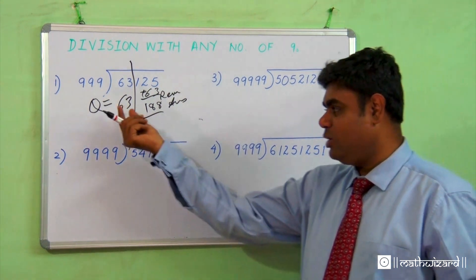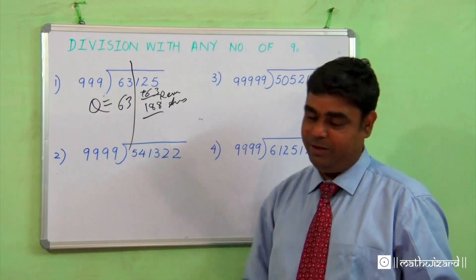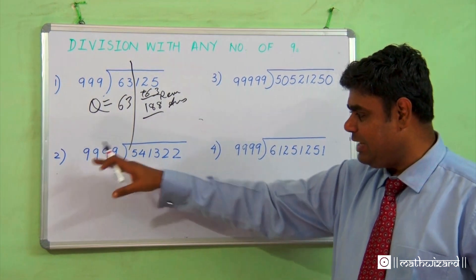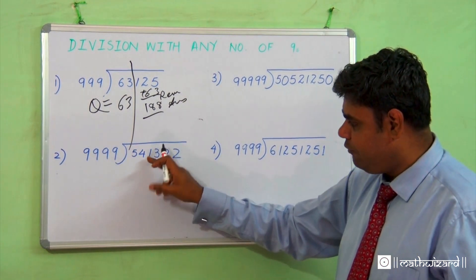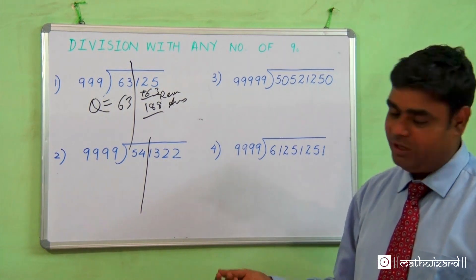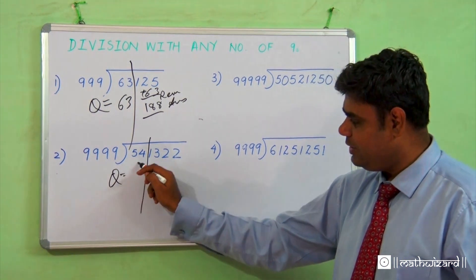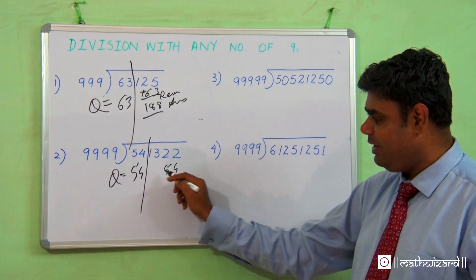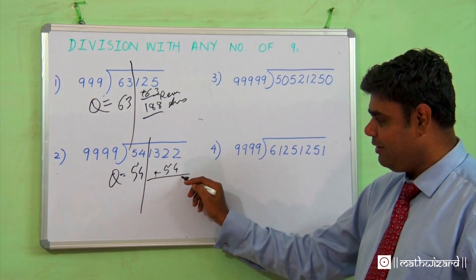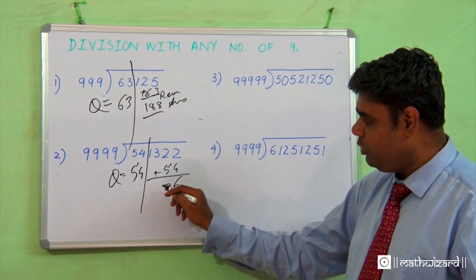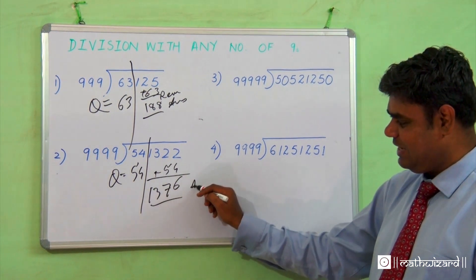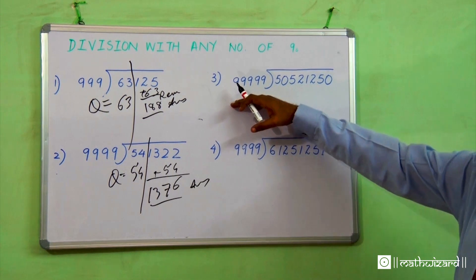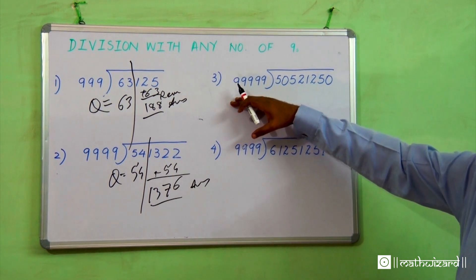My remainder is 188 and my quotient is 63. Now if I were to do this sum — how many nines are there? Four: 1, 2, 3, 4. My quotient is 54. I add this 54 to this side and it gives me my final remainder, which works out to 1376.